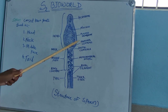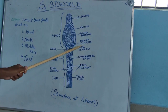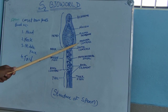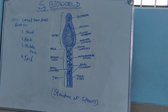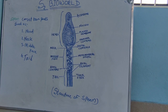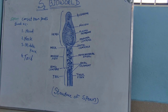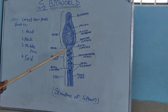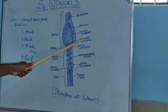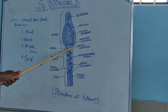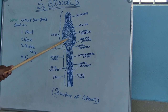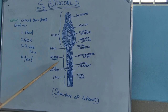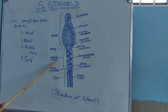The proximal centriole is responsible for the formation of the spindle during the first cleavage of the zygote. The distal centriole is present behind the proximal centriole and is responsible for the formation of the axial filament of the tail. The two centrioles lie at right angles to each other.